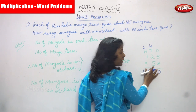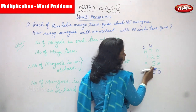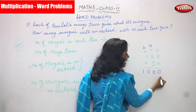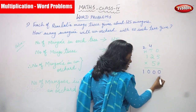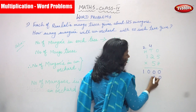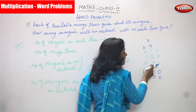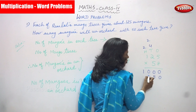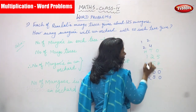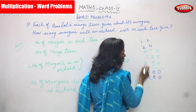Now I'm going to multiply by the tens place. The number in the tens place is 5. Before multiplying, I put 0 in the ones place. Then 5 fives are 25 — write 5, carry 2. 2 fives are 10, plus 2 is 12 — write 2, carry 1. 1 five is 5, plus 1 is 6. So 125 times 50 gives 6250.